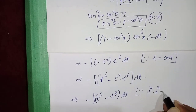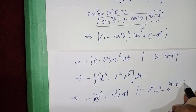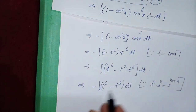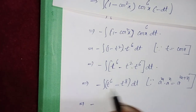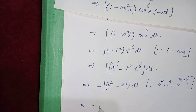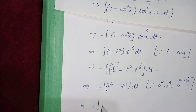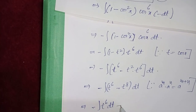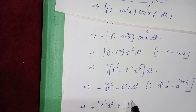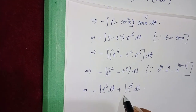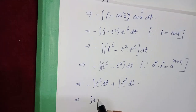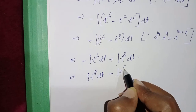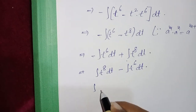Splitting the integral: −∫t⁶ dt + ∫t⁸ dt. Writing with positive terms first: ∫t⁸ dt − ∫t⁶ dt. We now apply the power rule: ∫xⁿ dx = xⁿ⁺¹ / (n+1) + C.